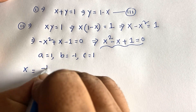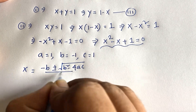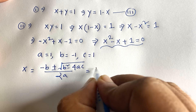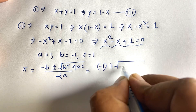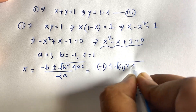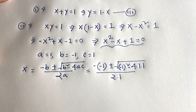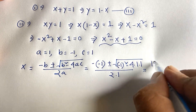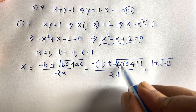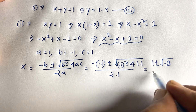Using the quadratic formula: x equals negative b plus or minus square root of (b squared minus 4ac), all over 2a. Substituting: x equals minus(−1) plus or minus square root of ((-1)² minus 4·1·1), over 2·1. This gives 1 plus or minus square root of (1 minus 4), over 2, which is 1 plus or minus square root of minus 3, over 2.